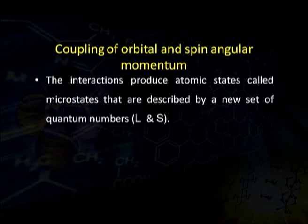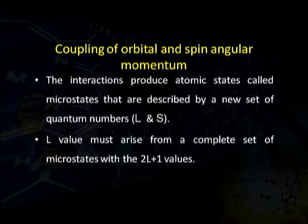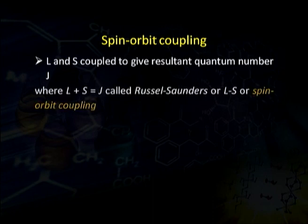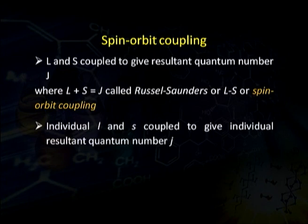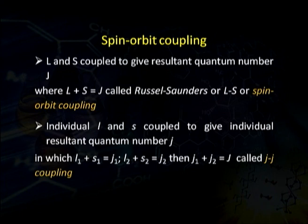The coupling of orbital and spin angular momentum produces atomic states described by quantum numbers L and S, called microstates. The L value must arise from a complete set of microstates and has a value of 2L+1. In spin-orbit coupling, L and S couple to give resultant quantum number J, so L+S equals J — this is called Russell-Saunders or LS coupling. In JJ coupling, individual electron L1+S1 gives J1, L2+S2 gives J2, and J1+J2 couple together.